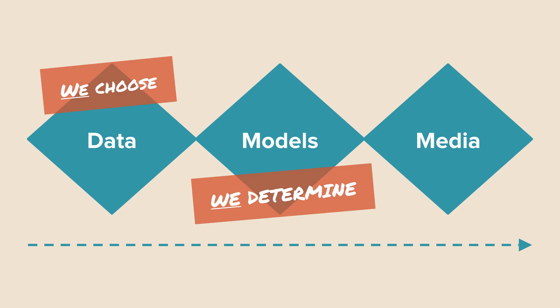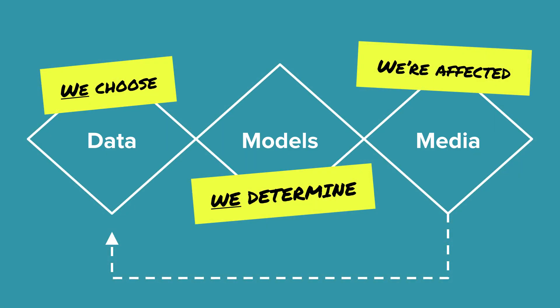When raters go through and label stuff, they're doing so based on protocols that have been designed by a person, with success criteria and evaluations that have been deemed correct by people, using data that has been sourced by people and originally captured by people. And then we get affected. It's not a pipeline — it's a feedback loop.